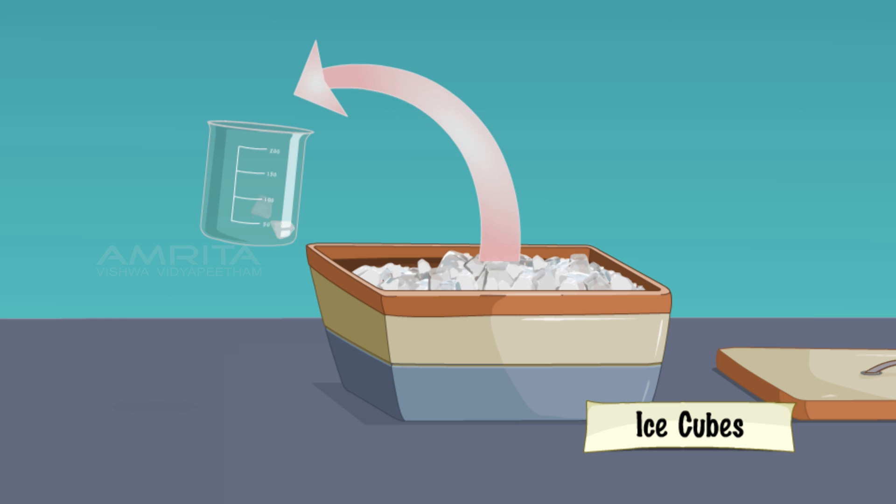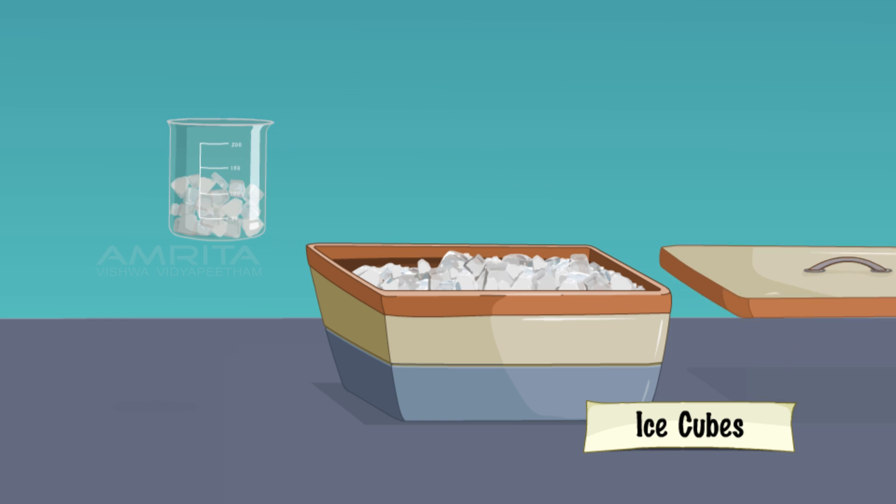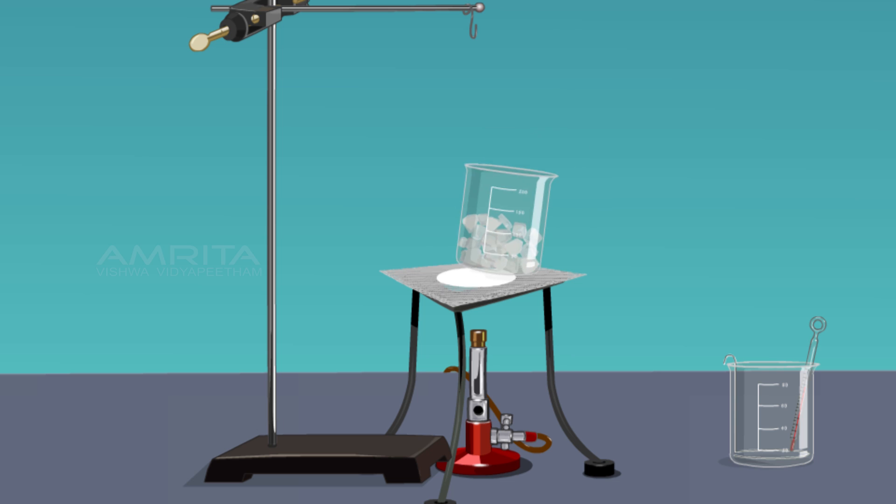Take some ice cubes in a beaker. Place the beaker on a wire gauze, keep it over a tripod stand and insert a stirrer into the beaker.